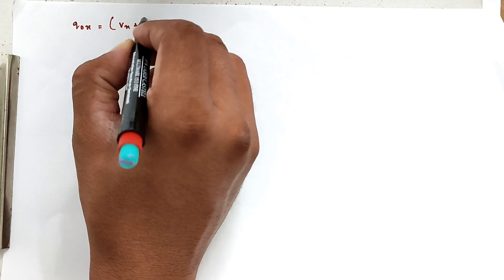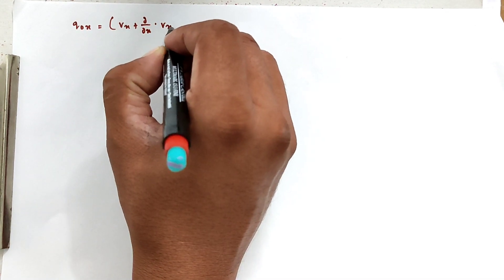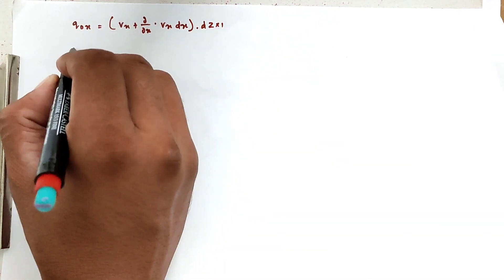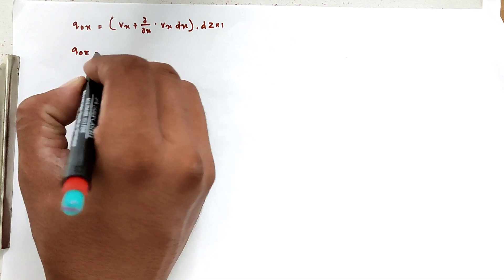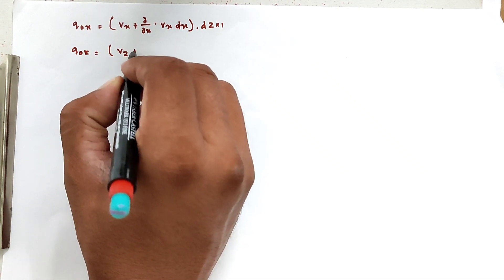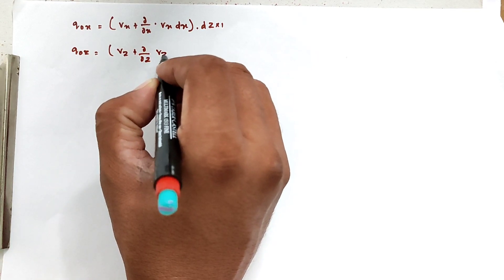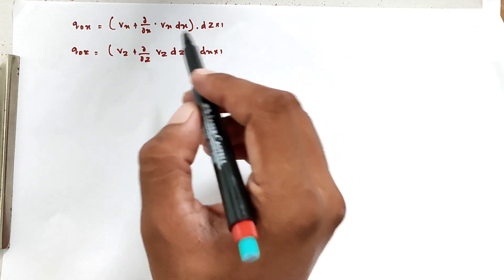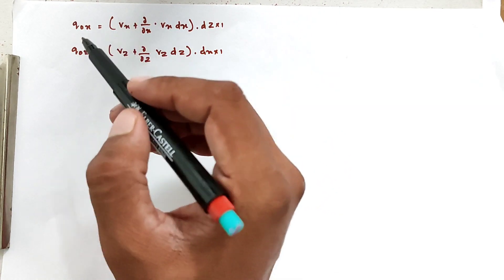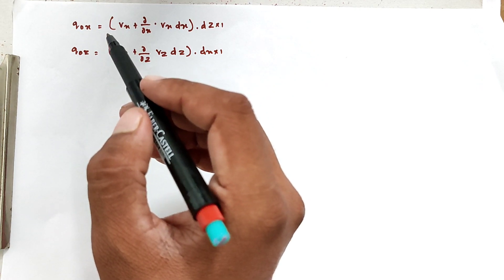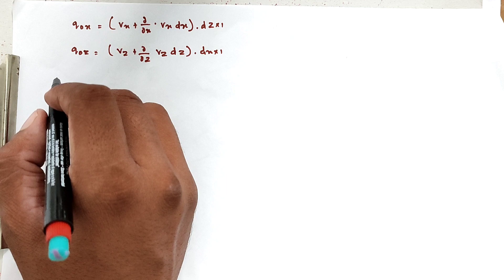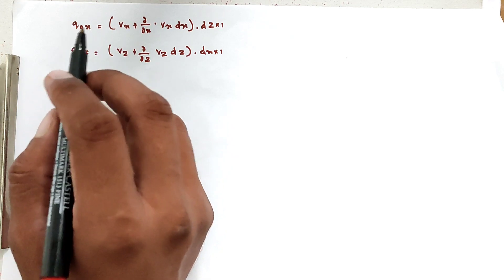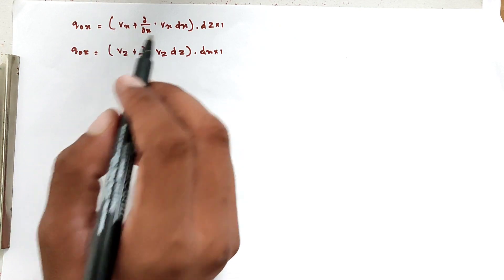The quantity of water leaving in the x direction is Q_out_x = [Vx + (∂Vx/∂x)·dx]·dz·1. The quantity of water leaving in the z direction is Q_out_z = [Vz + (∂Vz/∂z)·dz]·dx·1. Since the flow is steady and incompressible, the quantity of water entering the soil equals the quantity of water leaving the soil.